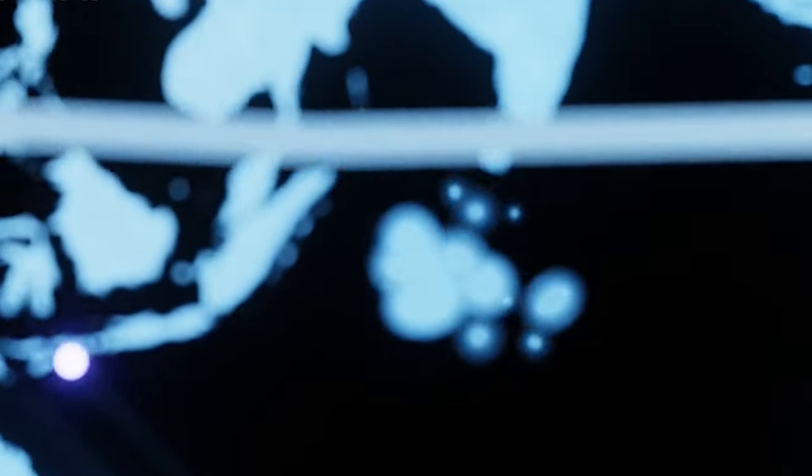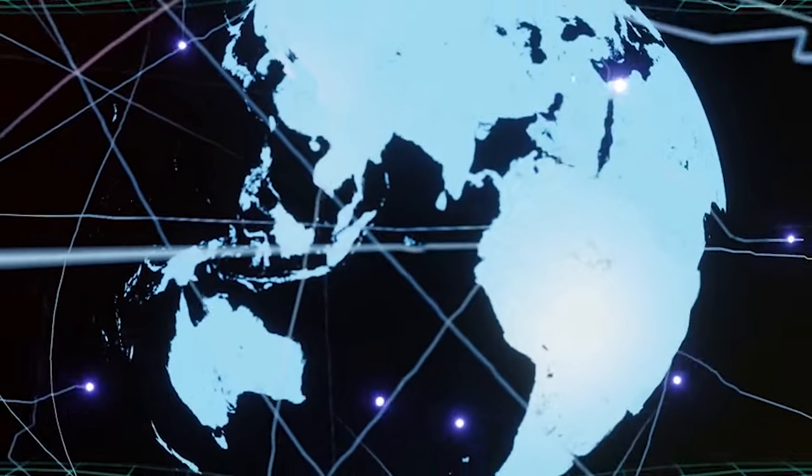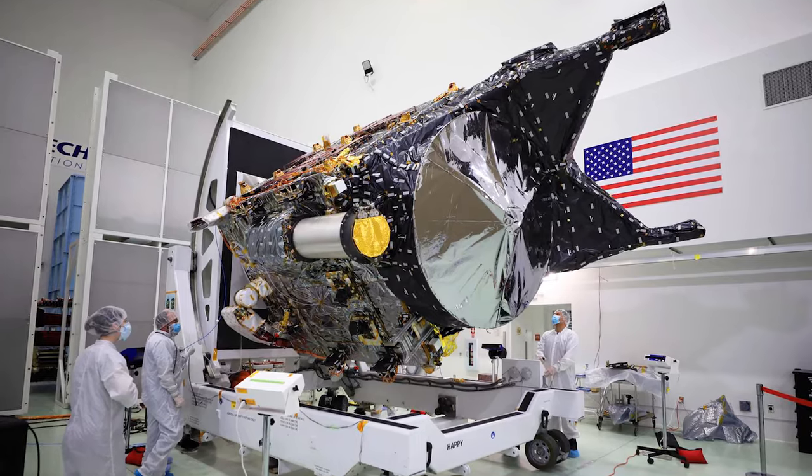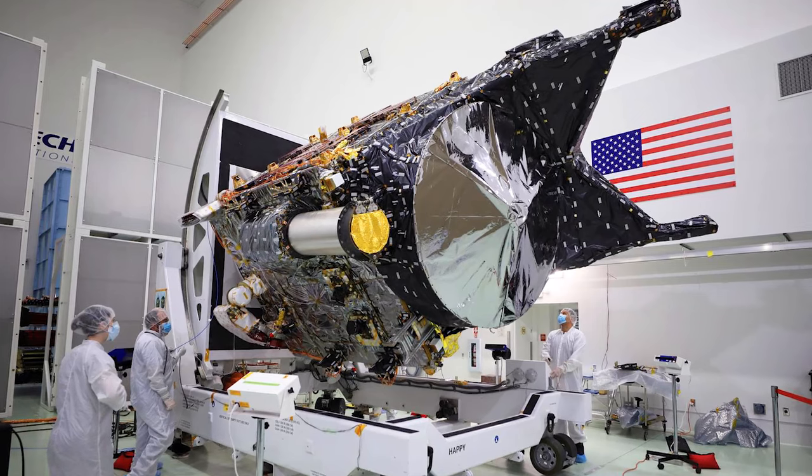DSOC consists of a device that can send and receive laser signals, called a flight laser transceiver, and a large telescope that can detect and decode the signals, called a ground station.